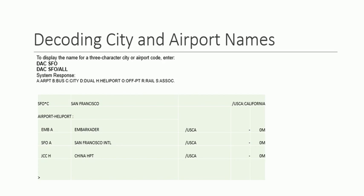When we write DHC SFO*C, that is the code of the city, and it tells us the city name is San Francisco, US/California, which is the state of that airport. It also tells us about the airports and heliports present — including SFOA, San Francisco International Airport, JCCH, and a heliport — giving the full name and all airports within that city.